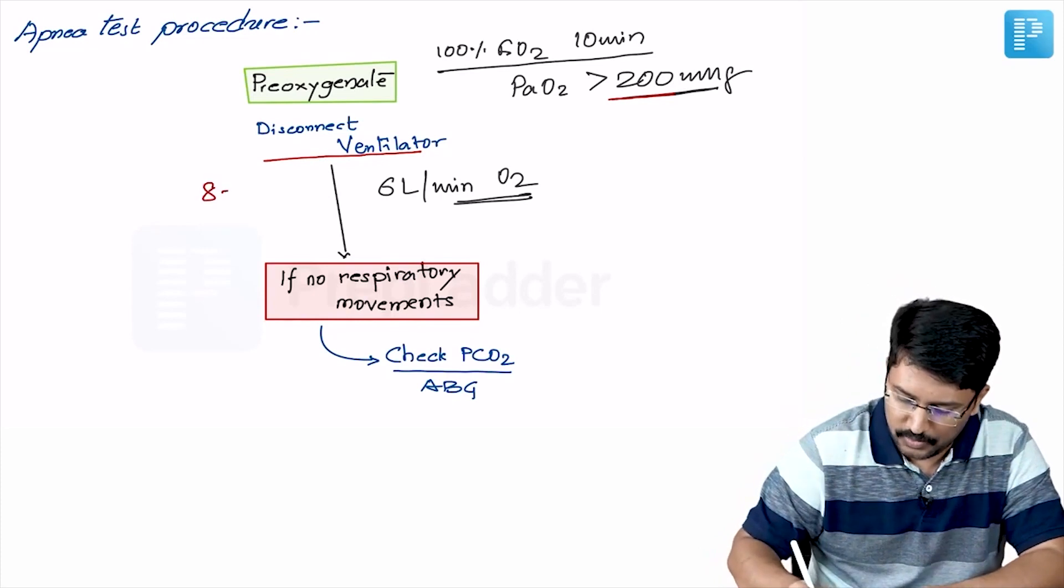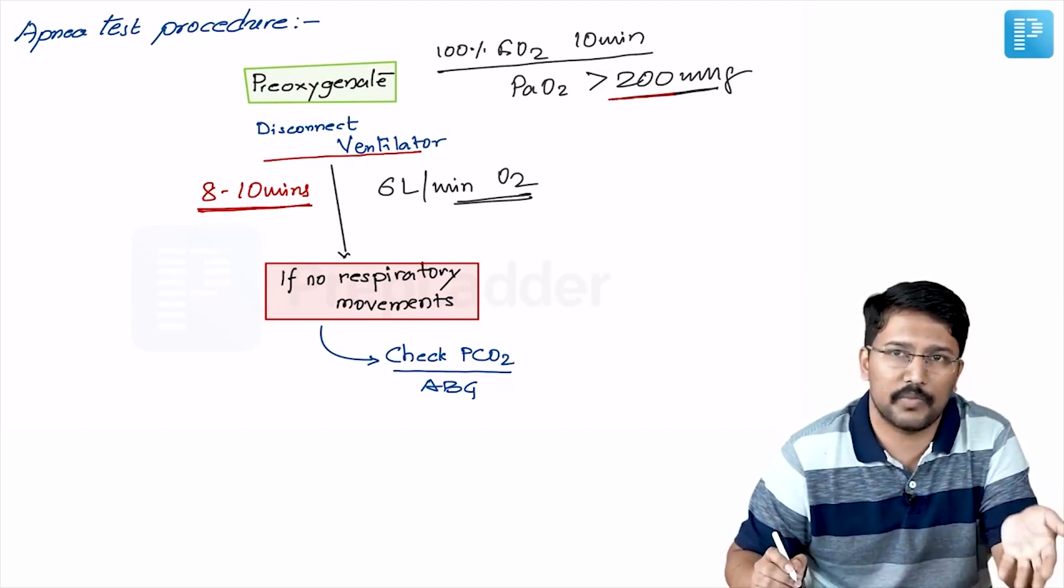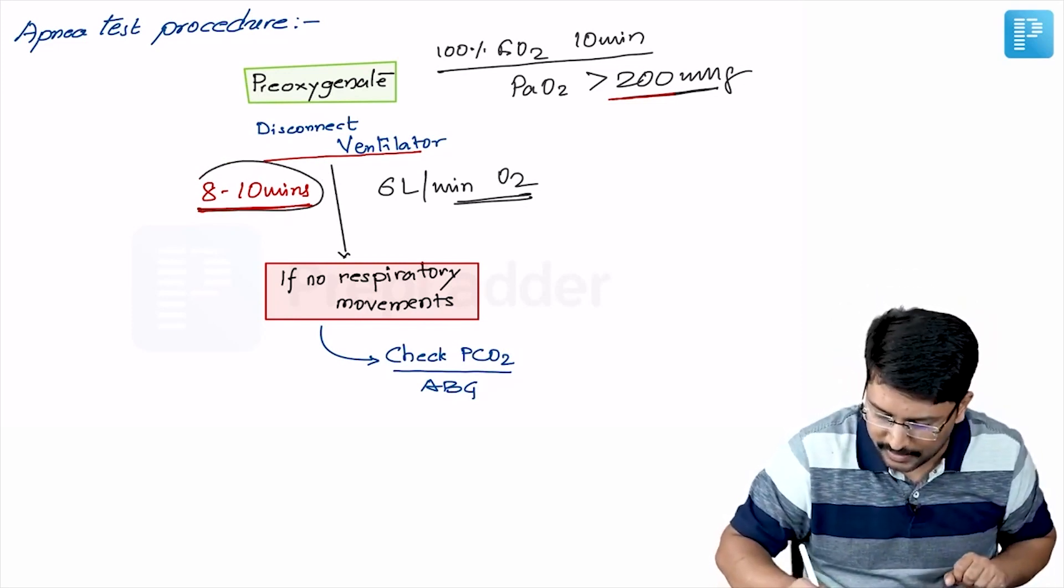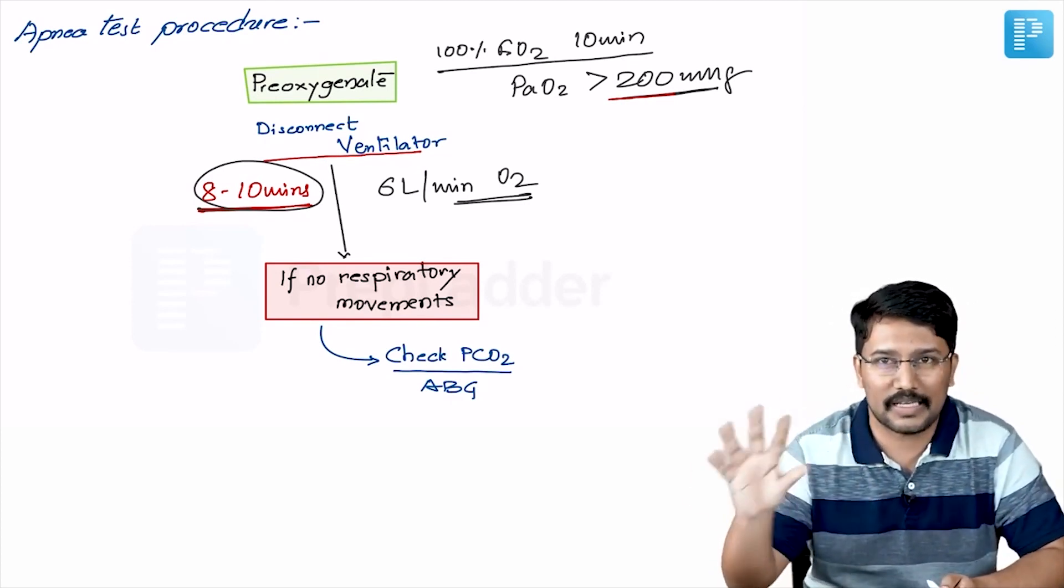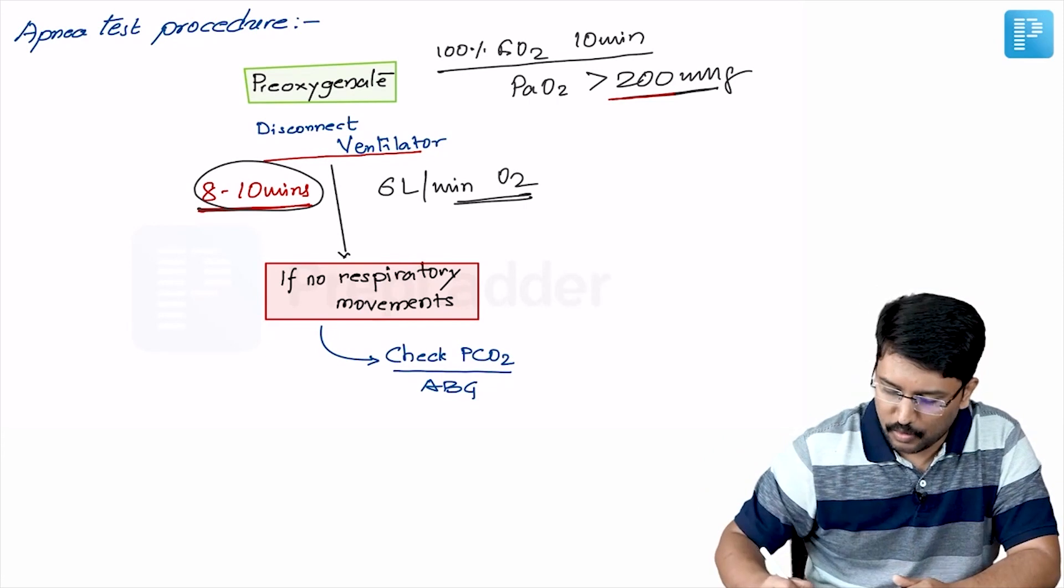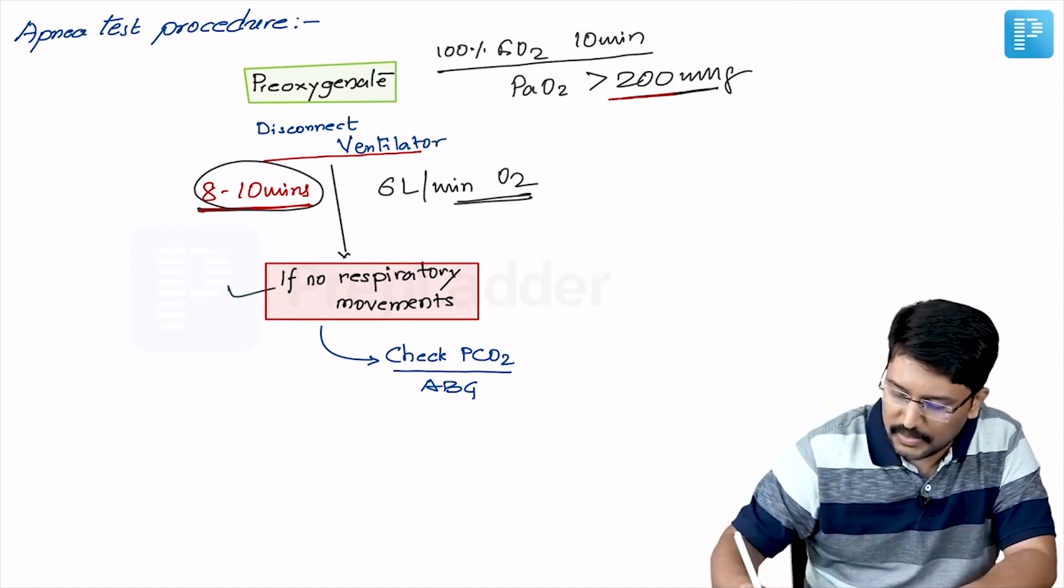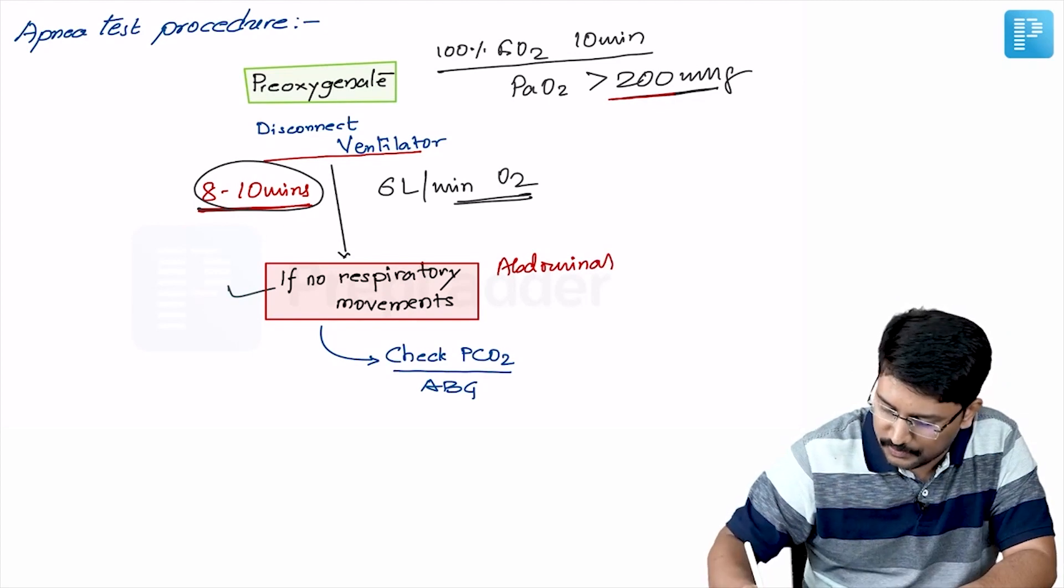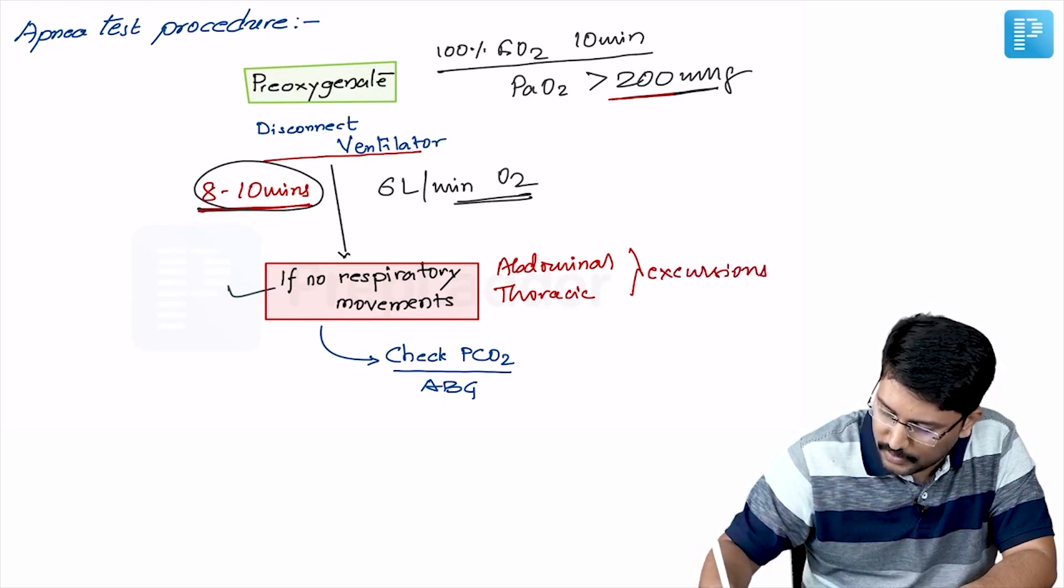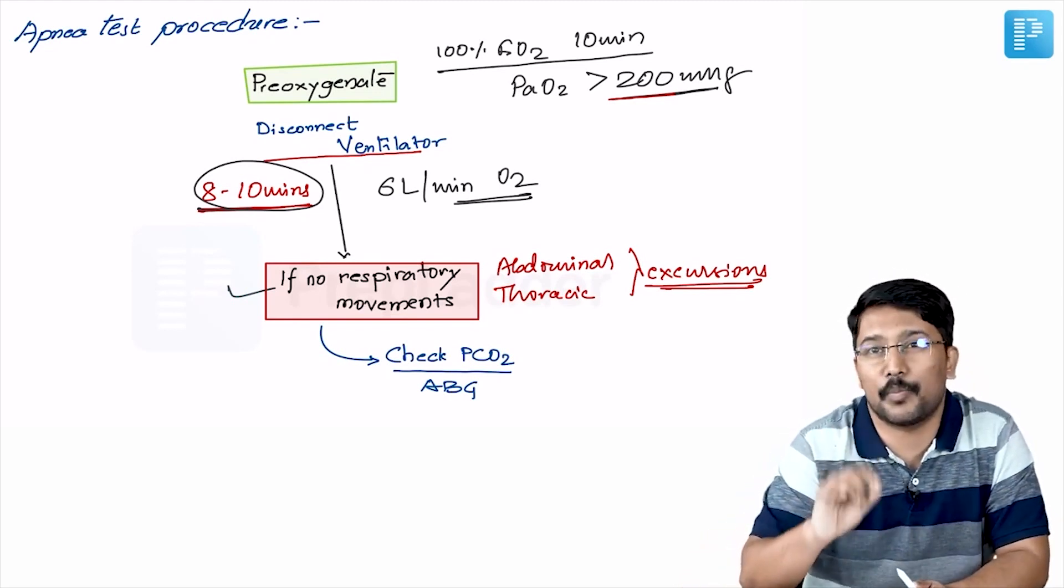Once you do that, observe the patient for next 8 to 10 minutes. Different textbooks mention different readings for this observation period. Some books precisely mention 8 minutes, some books precisely mentioning 10 minutes and then some authorities mentioning 8 to 10 minutes. During this observation period, when patient is disconnected from the ventilator and he is being oxygenated through a cannula placed into a CT tube, observe for respiratory movement. The definition is basically abdominal or thoracic excursions. If you notice that there are excursions of the abdominal or thorax, that means there are respiratory movements. If that does not happen for 8 to 10 minutes, that means patient sustained apnea for that period.